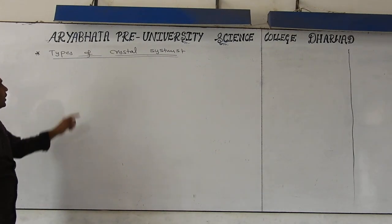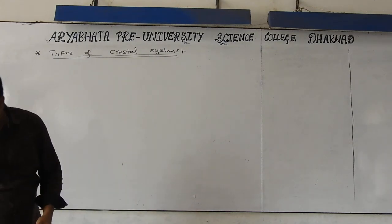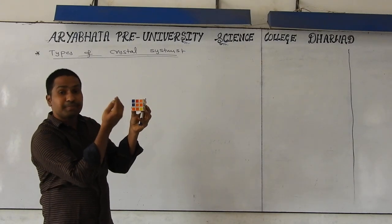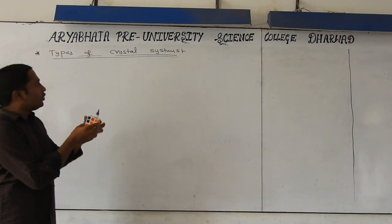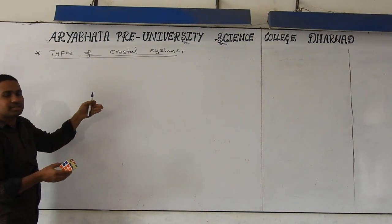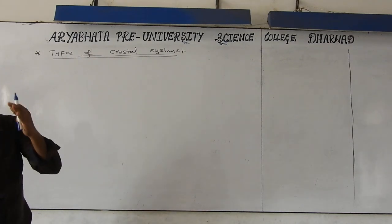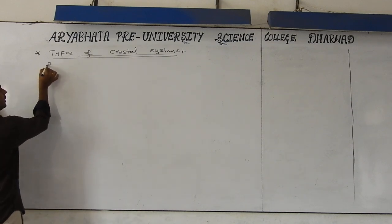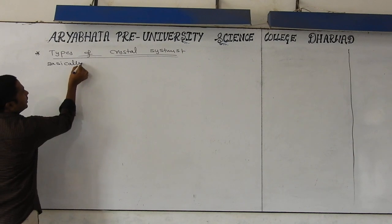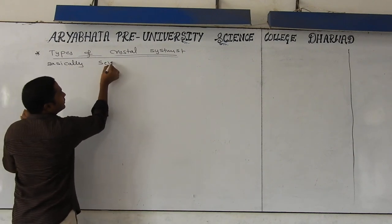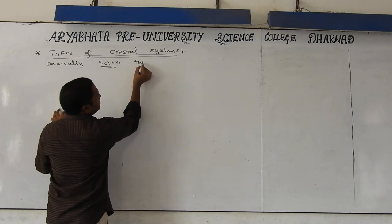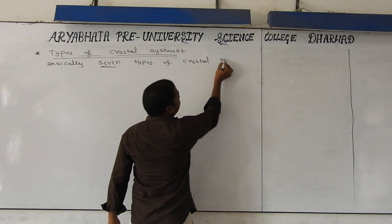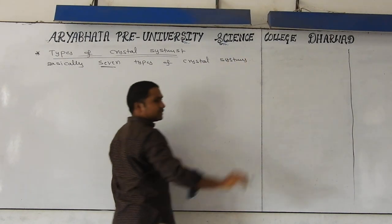Types of crystal lattices means what? Different shapes of the crystals we are getting based on different shapes of the unit cells. Now we are discussing different types of crystal systems based on their shapes — very, very important for competitive point of view. Basically, we have seven types of crystal systems.